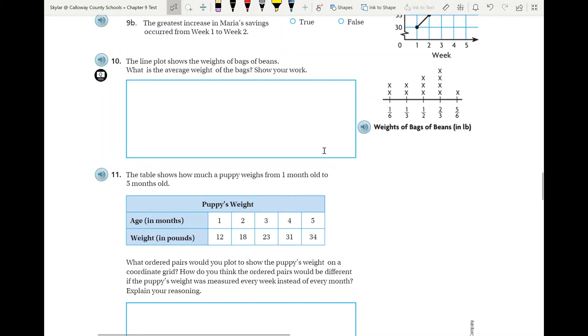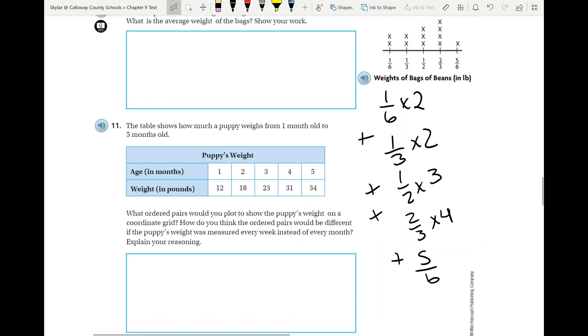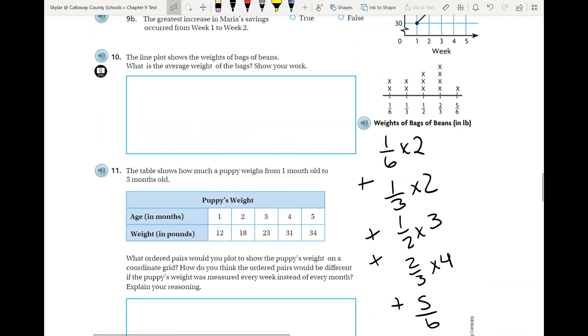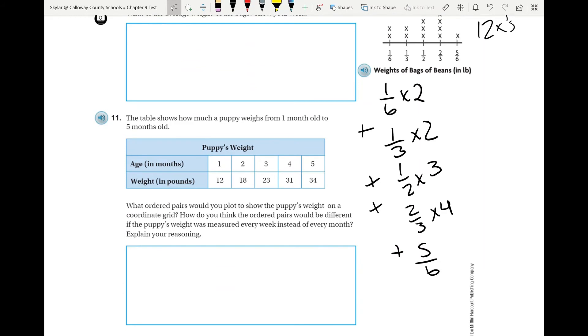All right, number 10 is another tough one. Remember, whenever you're trying to find an average, you need to take whatever that number is, so one-sixth, multiply it by the number of X's it has. So you've got one-third times one, two X's, plus one-half times three, plus you've got two-thirds times four, and then at the very bottom, of course, you've just got five-sixths since it's times one. Don't forget that. Whenever you're adding fractions, you have to have common denominators. So make sure that you have those common denominators. Once you add all of that up, you'll divide it by the total number of X's you have. So one, two, three, four, seven, eight, twelve. You have twelve X's.